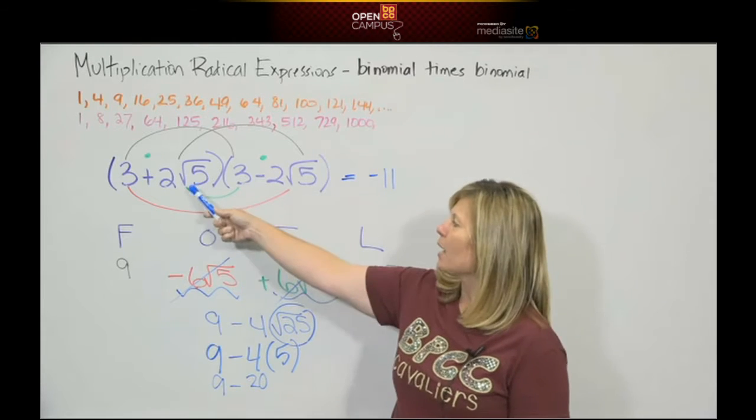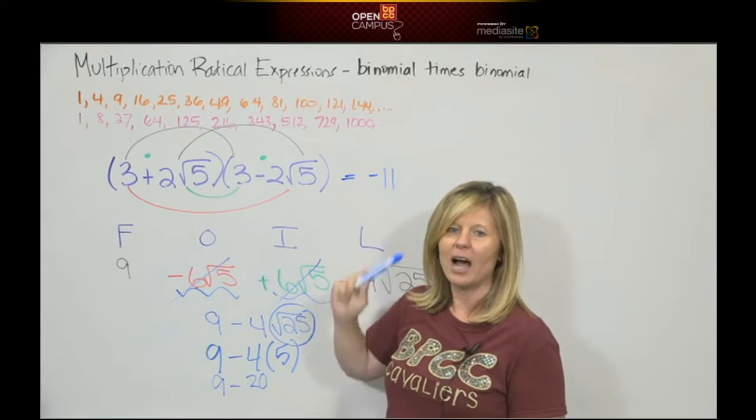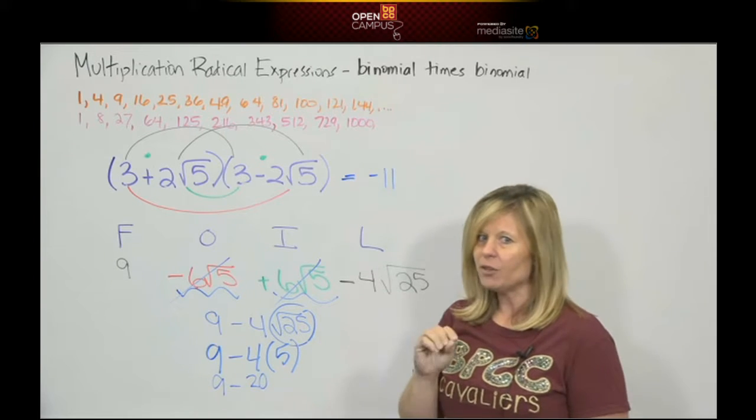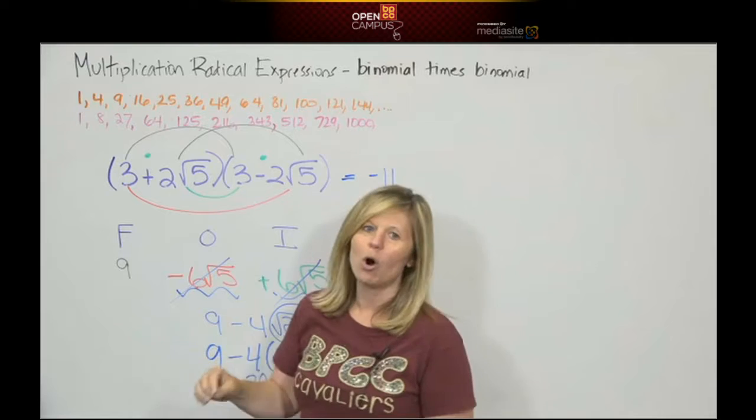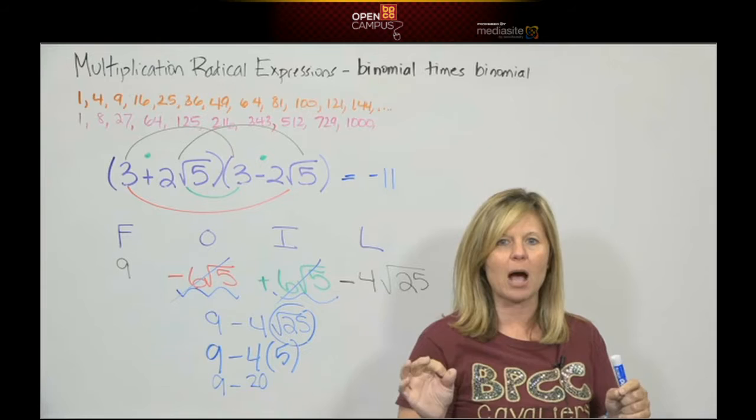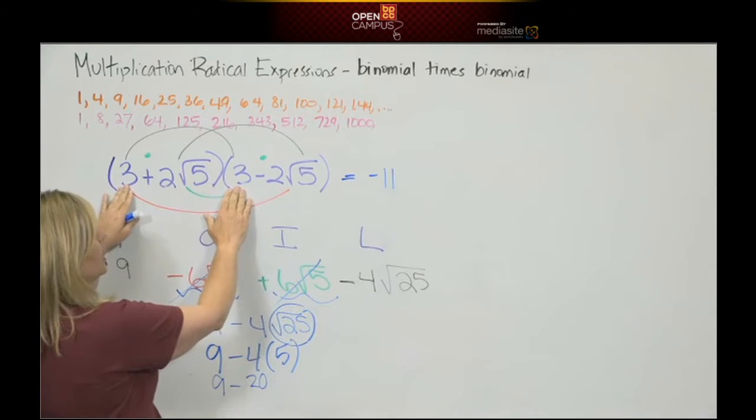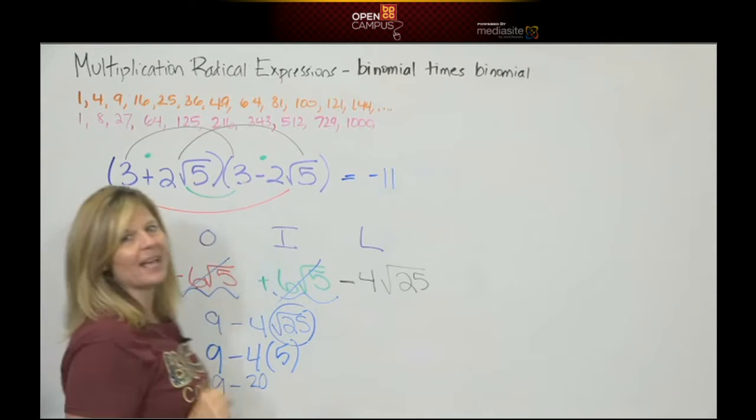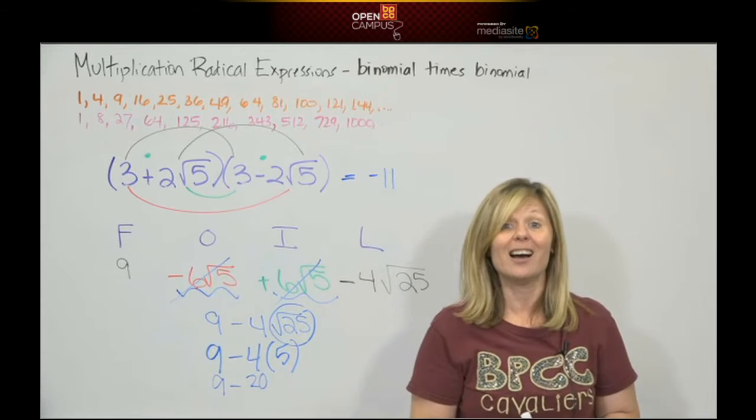That's pretty cool that we multiplied a binomial with a radical times a binomial with a radical, and we got an integer. Now, let's review something. Listen, if you remember from polynomial land, what do you call two binomials that have the same terms, but middle symbols are opposite? We both had the terms 3. We both had the terms 2 square roots of 5. One was positive. One was negative. Remember, those were called what? Good. Conjugates.